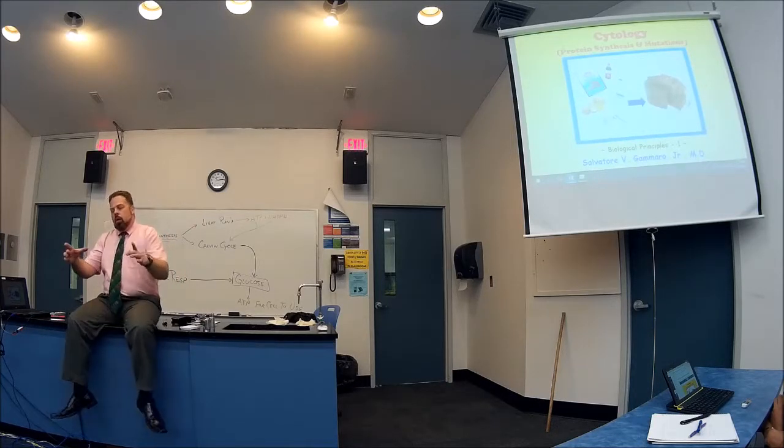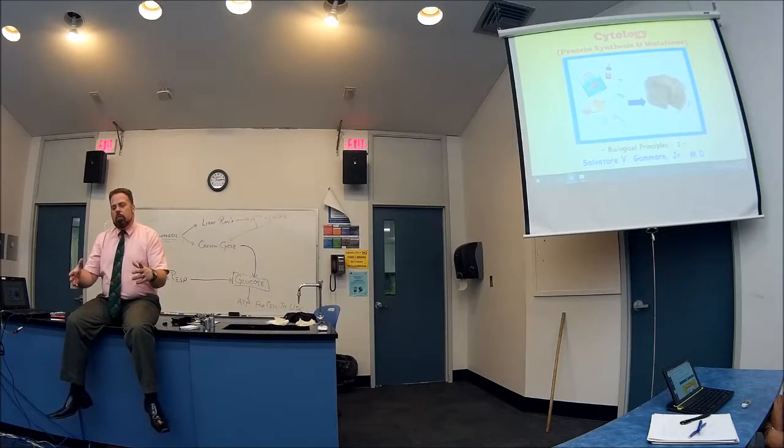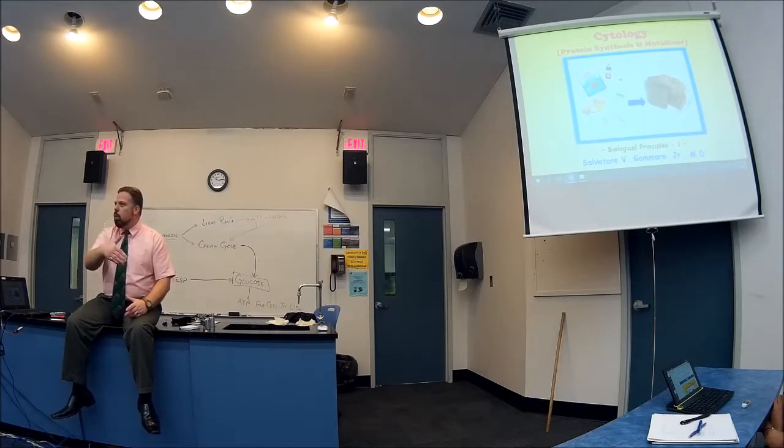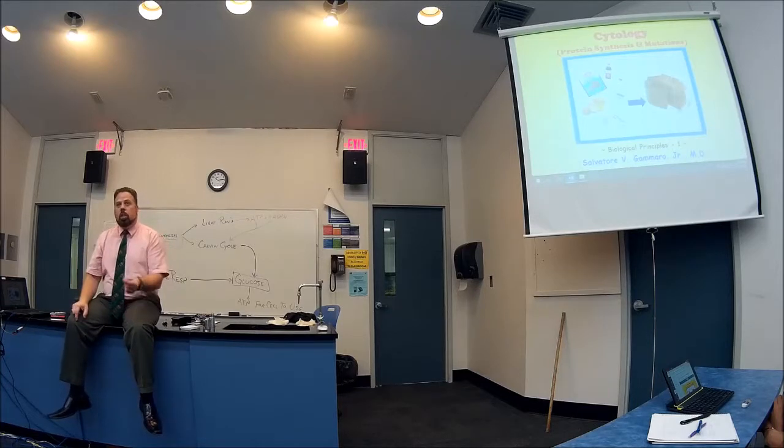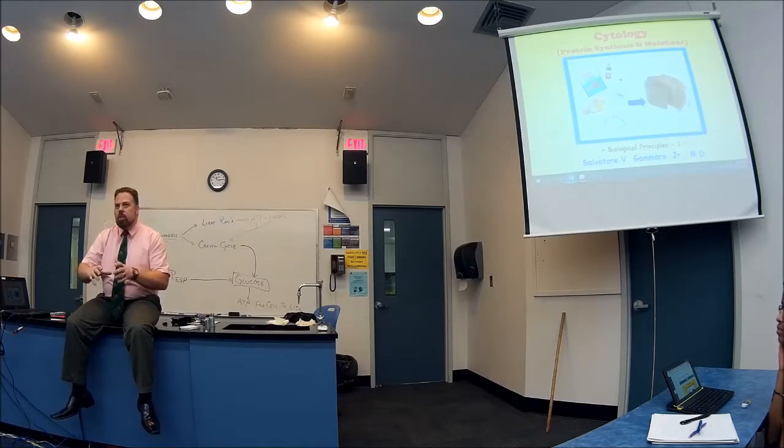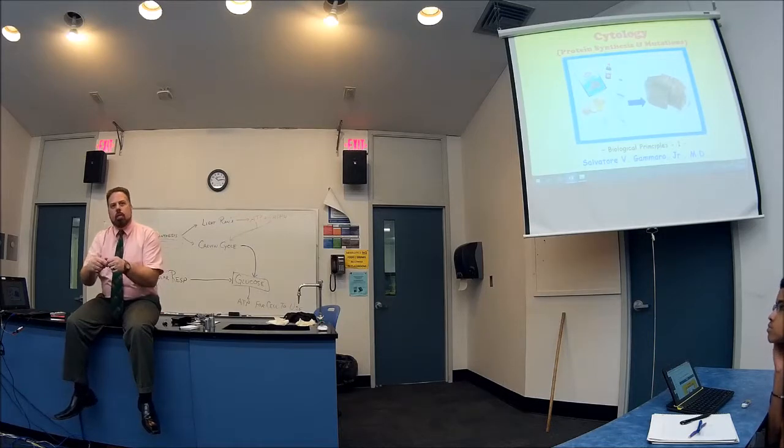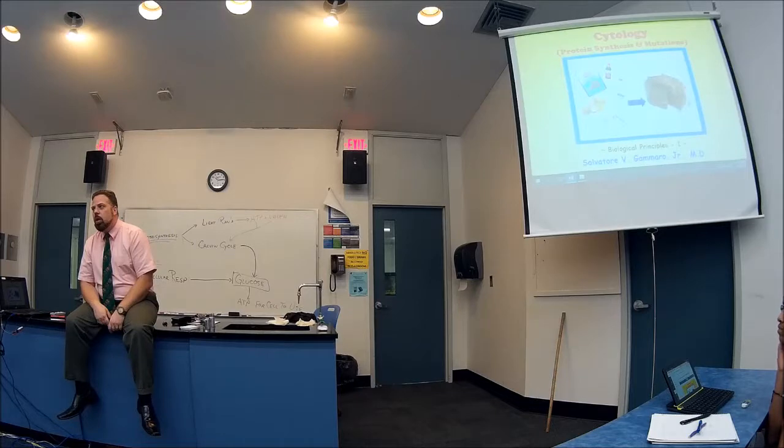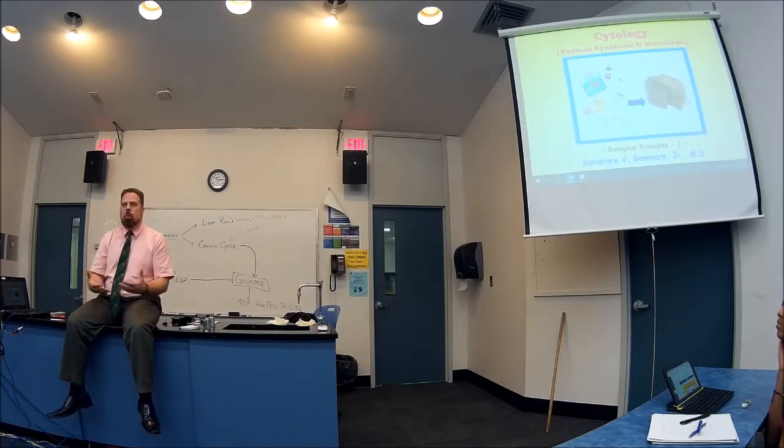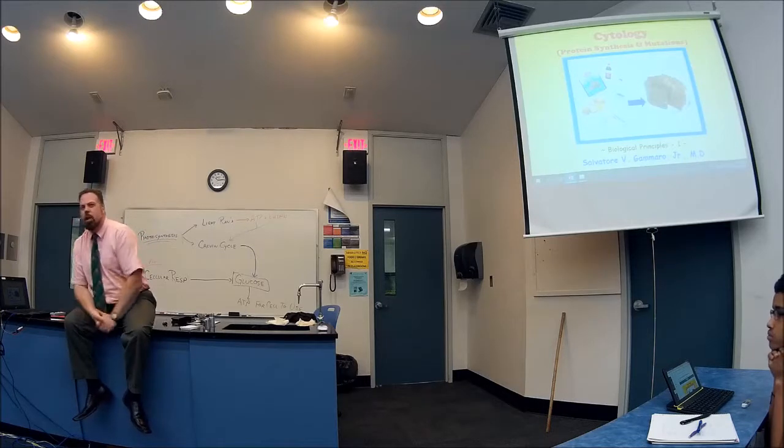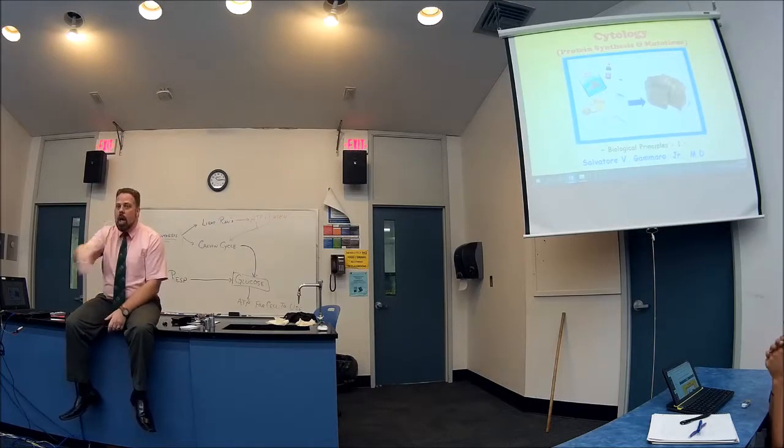You got the brownies in the pan and stuff, but you're gonna have to now cut it up. This cutting up, this packaging - some of them I'll put in saran wrap. This packaging is what the Golgi apparatus does, it makes it so it's usable. You cut it up.